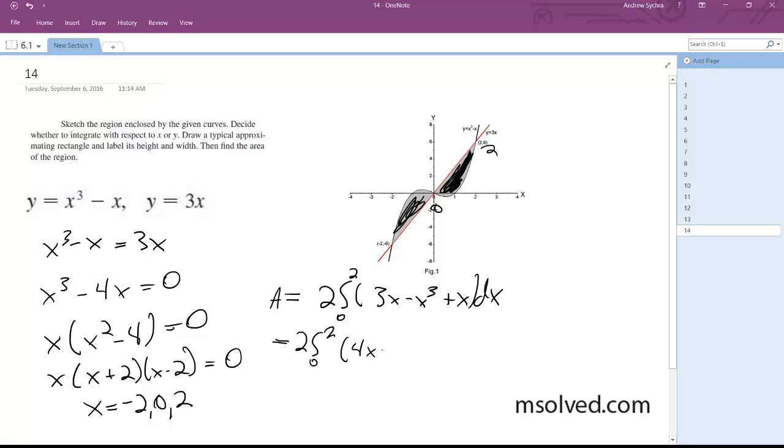4x minus x cubed. That's what we get when we add the x to the 3x dx, so we get 2 quantity 2x squared minus x to the 4th over 4 from 0 to 2.